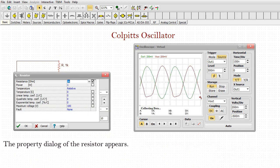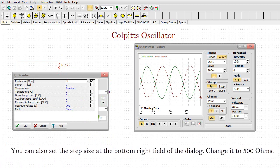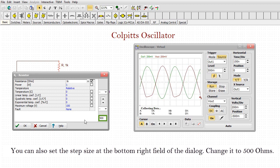The property dialog of the resistor appears. Now, you can change the value of the resistor with the up and down arrows at the right-hand side of the dialog box, and watch the waveforms on the oscilloscope. You can also set the step size at the bottom right field of the dialog. Change it to 500 ohms.